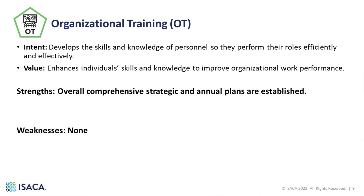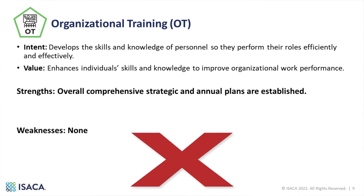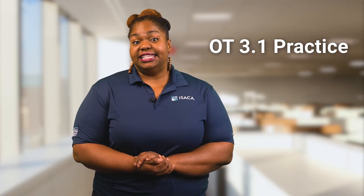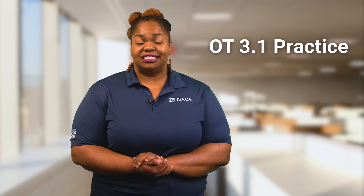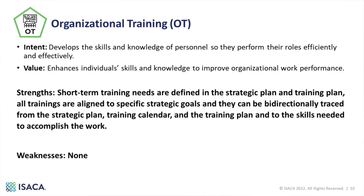Now let's look at an example of a gratuitous strength from the organizational training practice area: overall comprehensive strategic and annual plans are established. As written, this defines exactly what the OT 3.1 practice asks for and again it doesn't explain why the plans are comprehensive. Here's a better way to turn it into an actual strength: short-term training needs are defined in the strategic plan and training plan. All trainings are aligned to specific strategic goals and they can be bi-directionally traced from the strategic plan, training calendar, the training plan, and to the skills needed to accomplish the work.